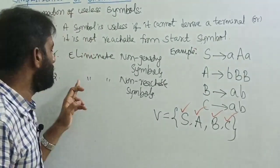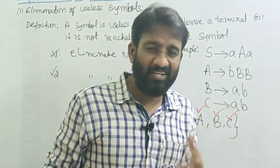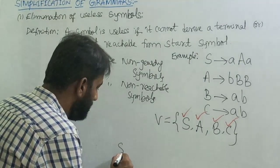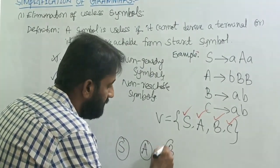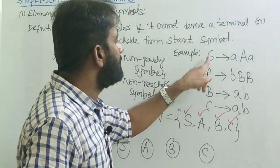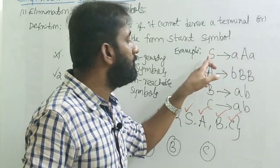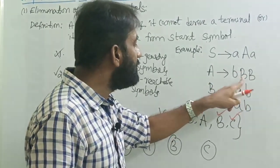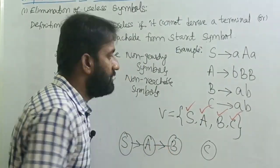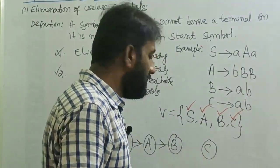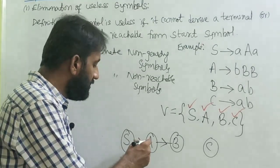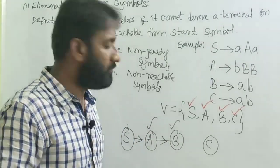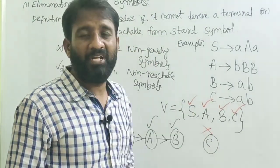For the second step, eliminate non-reachable symbols. Identify any symbols not reachable from the starting symbol. Write all variables: S, A, B, C. From S → aAa, A is reachable. From A → bBB, B is reachable. B → ab, C → ab — but C is never mentioned in any right-hand side reachable from S. So C is not reachable.